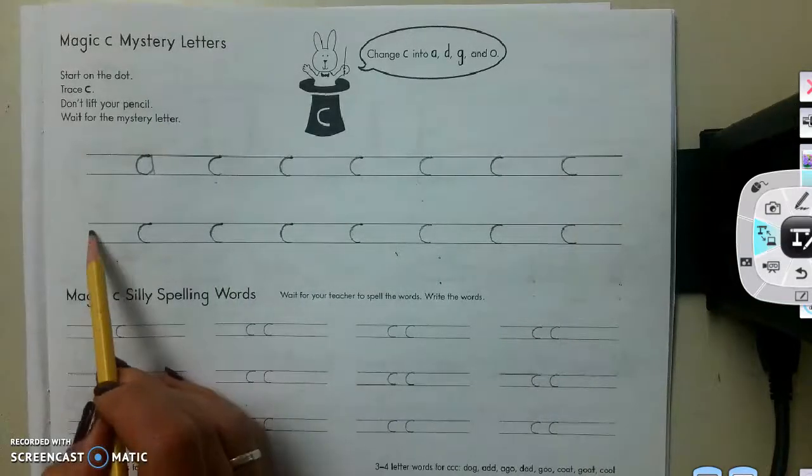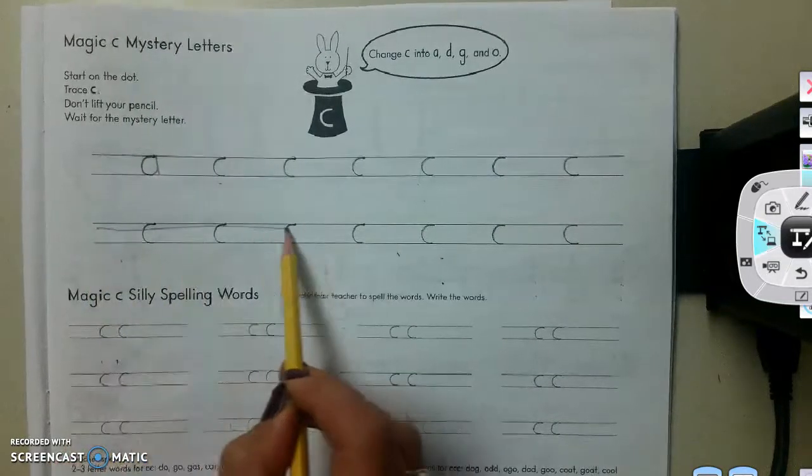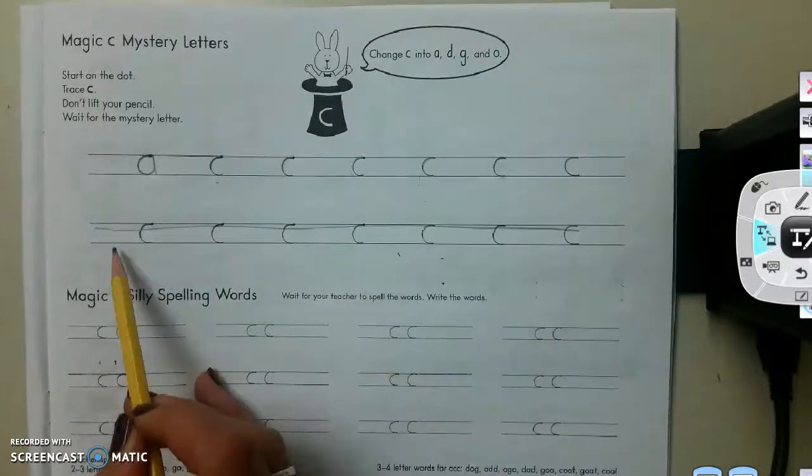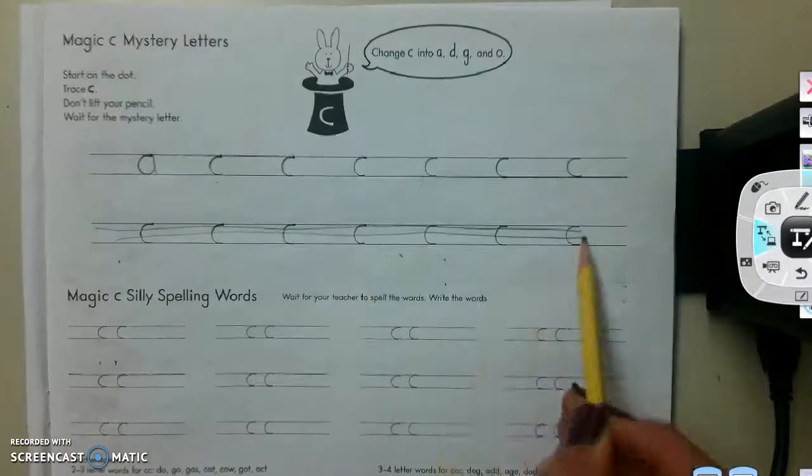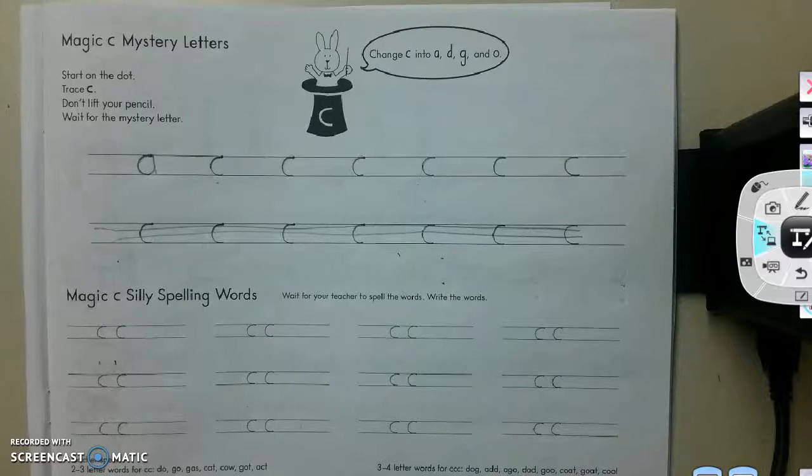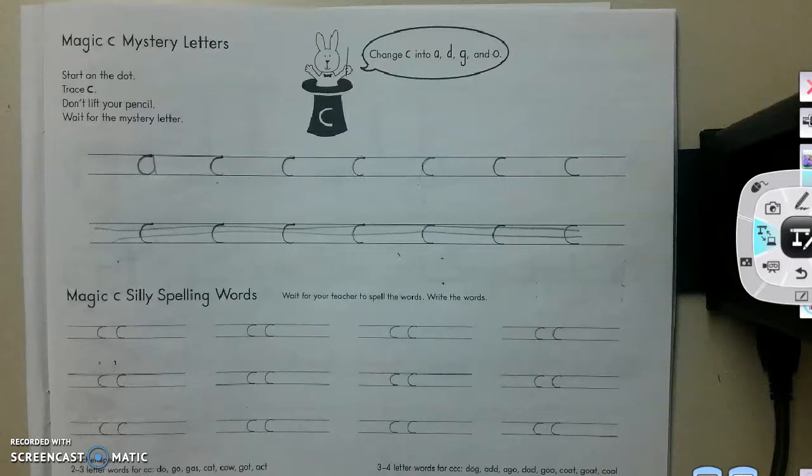We're going to skip this row for today. If you would like to practice and just draw your own letters, you can. Or else you can skip it with me. Now I'd like to do silly spelling words. So again, you're going to wait for me to spell the words and then you are going to write them.